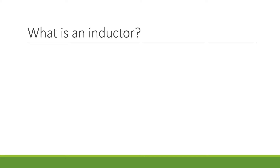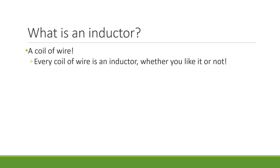What is an inductor? An inductor is simply a coil of wire. That means that every coil of wire is an inductor, whether you like it or not. Sometimes we build inductors intentionally and use them in our circuits for some of their properties, but other times we have coils of wire in electronic devices and they act like inductors even though we might not want them to. This is true especially in electric motors, and we'll talk about that a little bit later on.